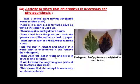Next, wash the leaf again in water and dip it into iodine solution. As we studied in earlier classes, the test for starch is done using iodine solution. You will observe that the green parts of the leaf turn blue-black.